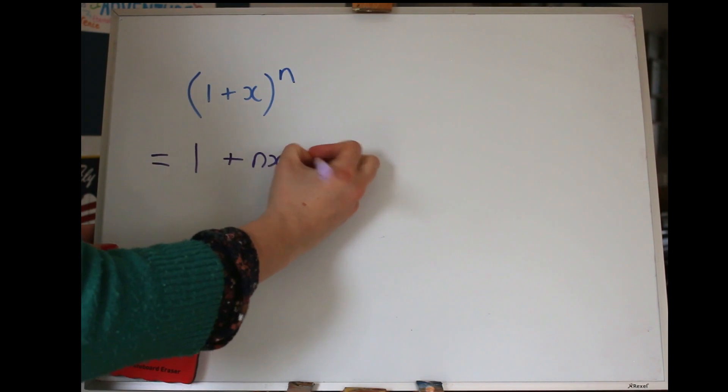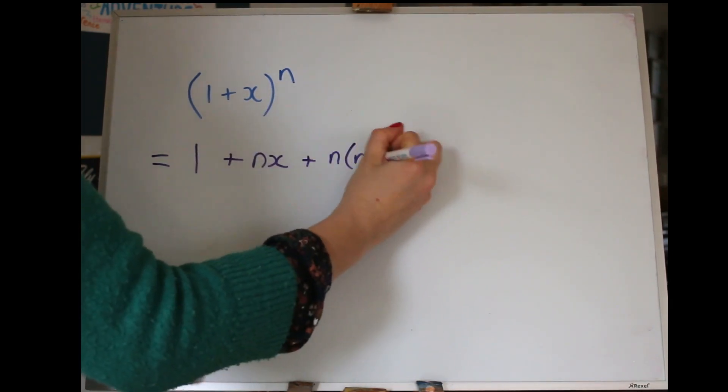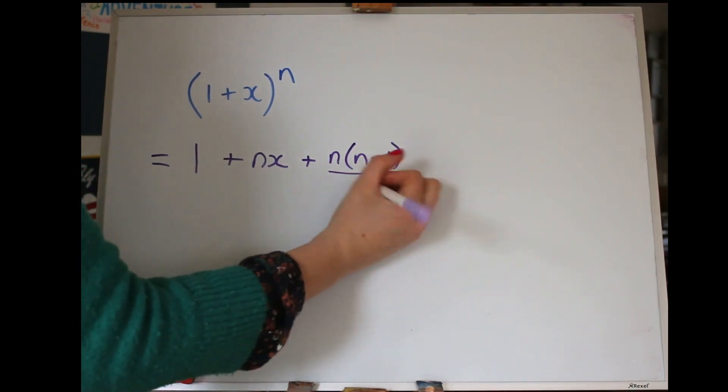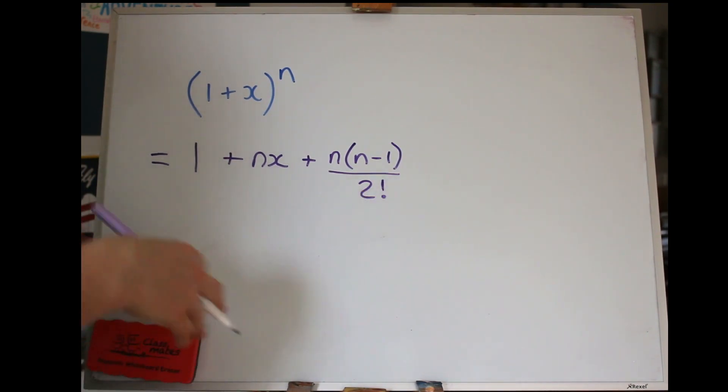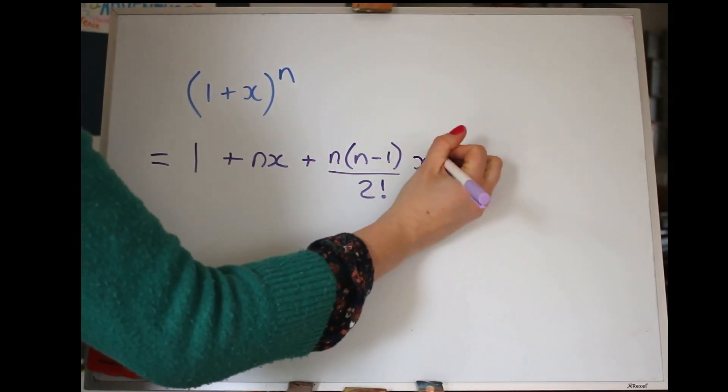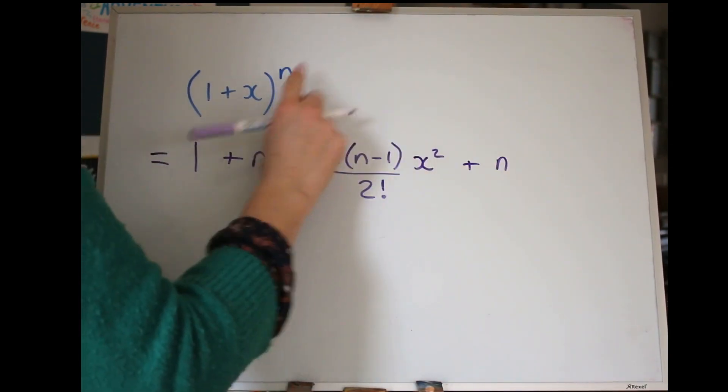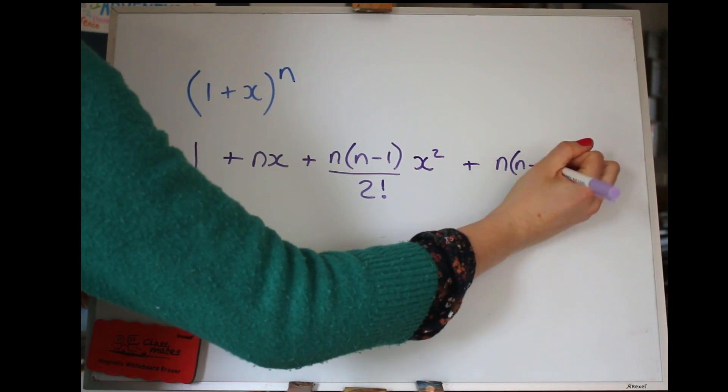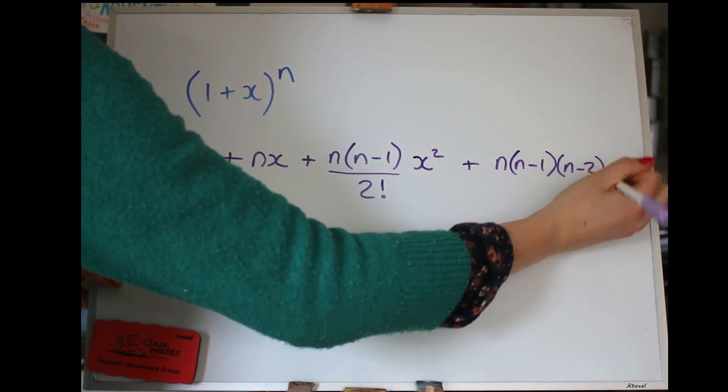The third term, you use your power N and you times by N minus 1, 1 less than N, divide by 2 factorial, and as a reminder, factorial means multiplying by all the numbers beneath, so 2 factorial is 2 times 1. You're then going to multiply by that X squared. Let's do the next term on, and again start with N, and multiply by N minus 1, and this time we'll do another one, we'll do a third, N minus 2.